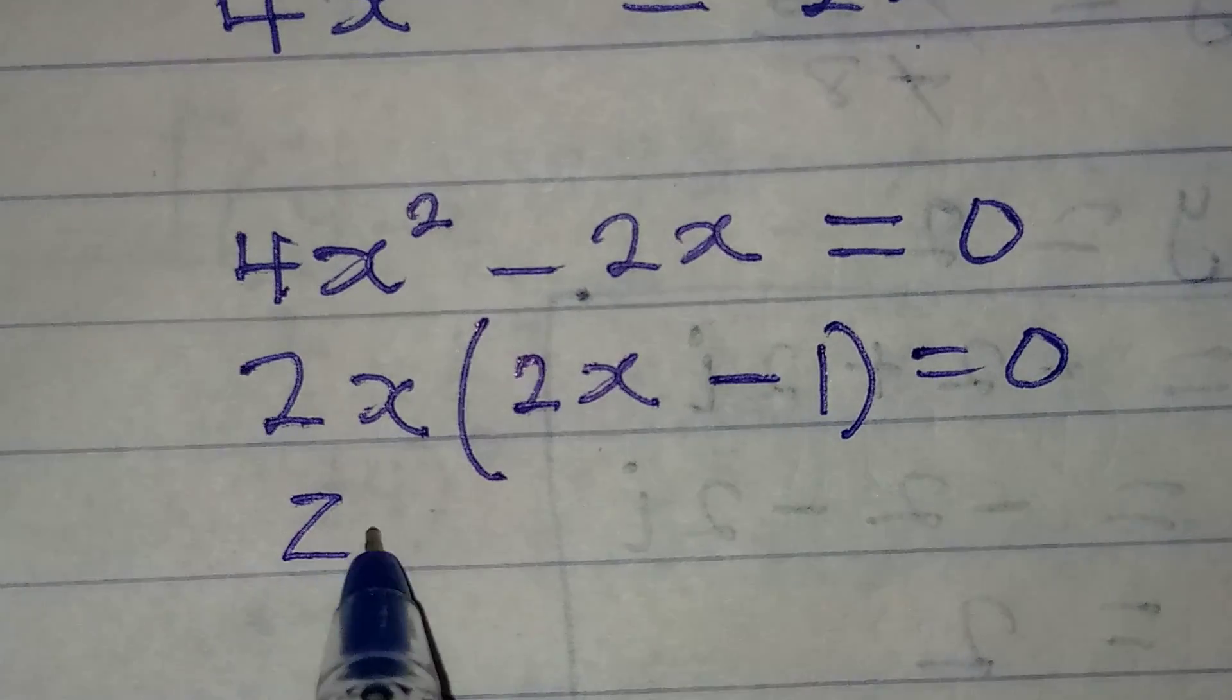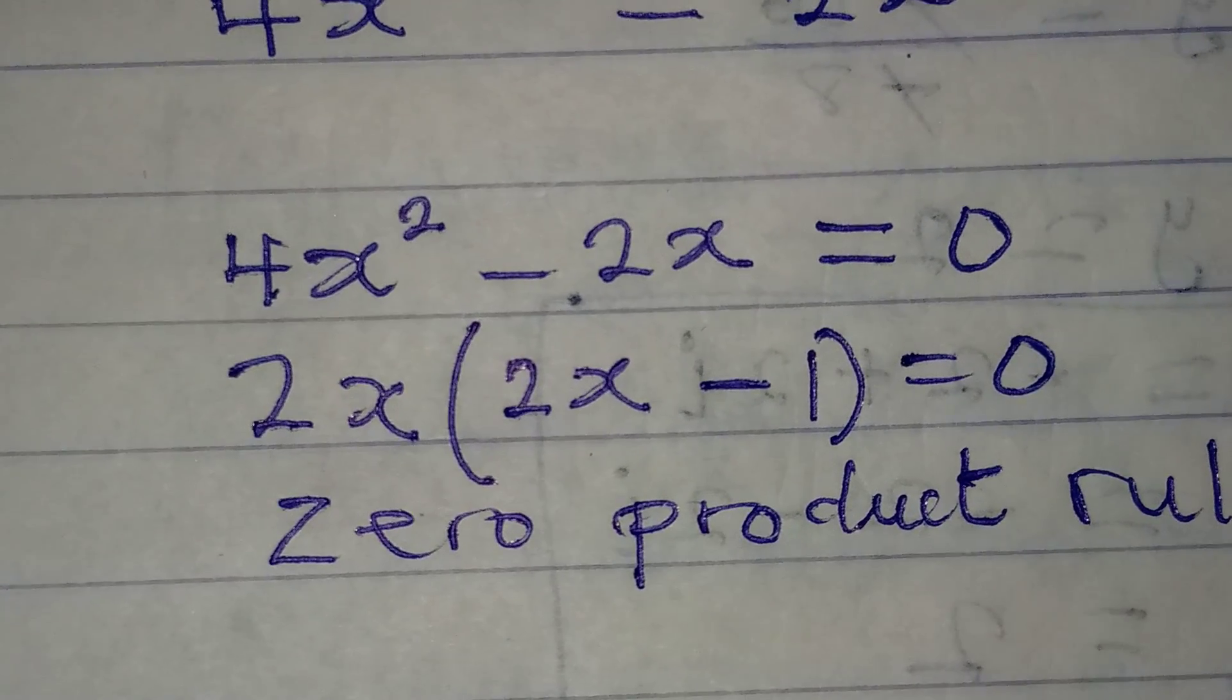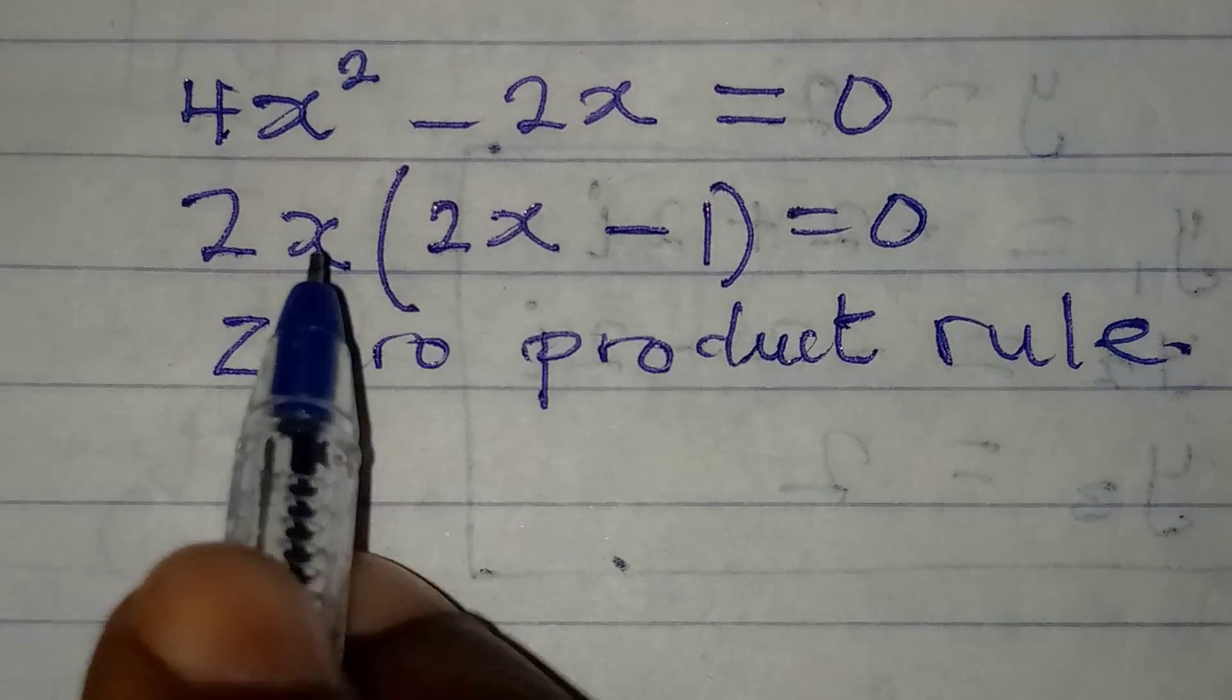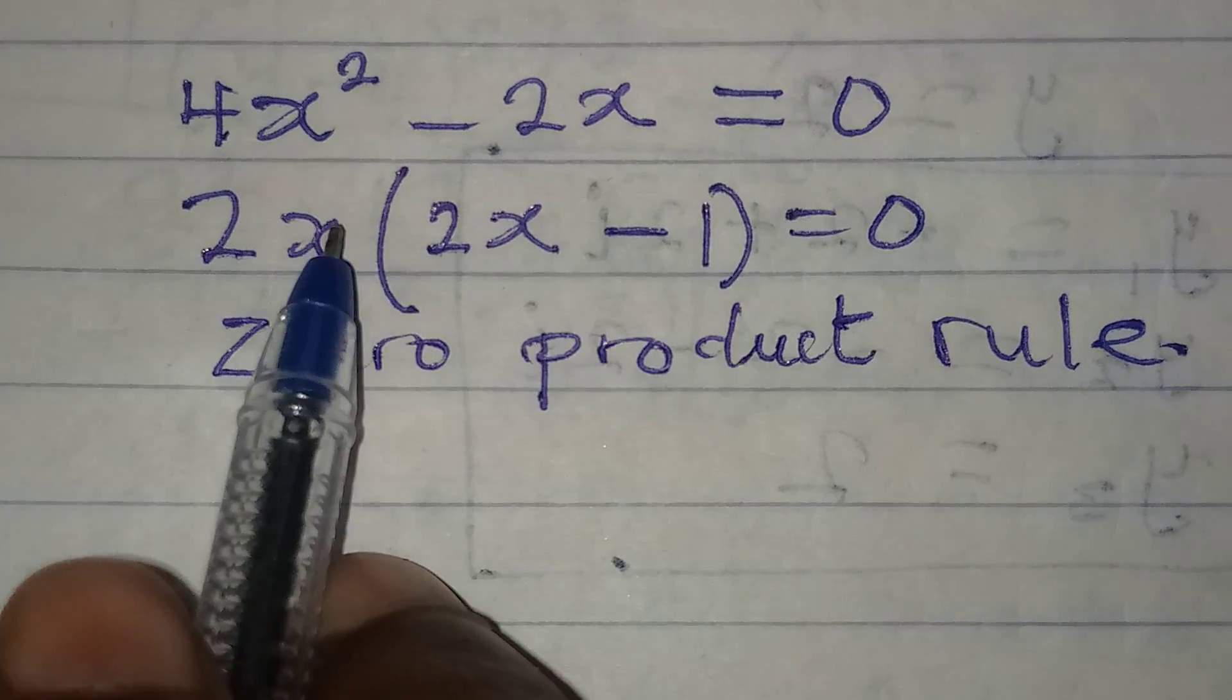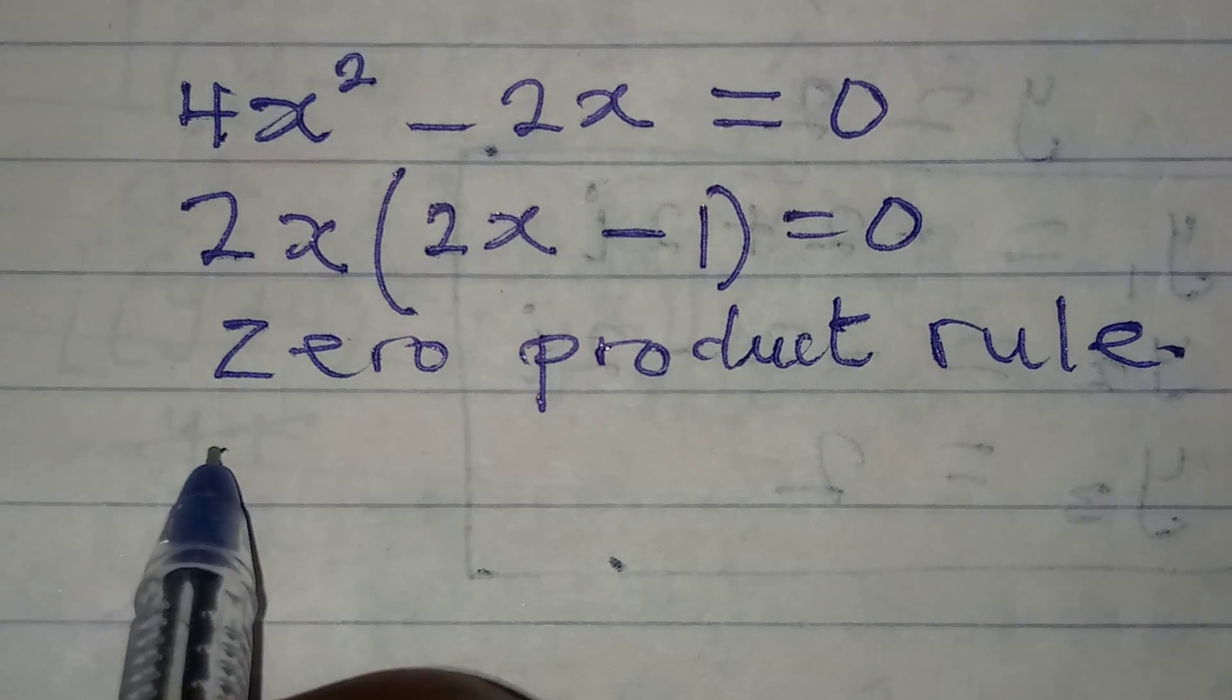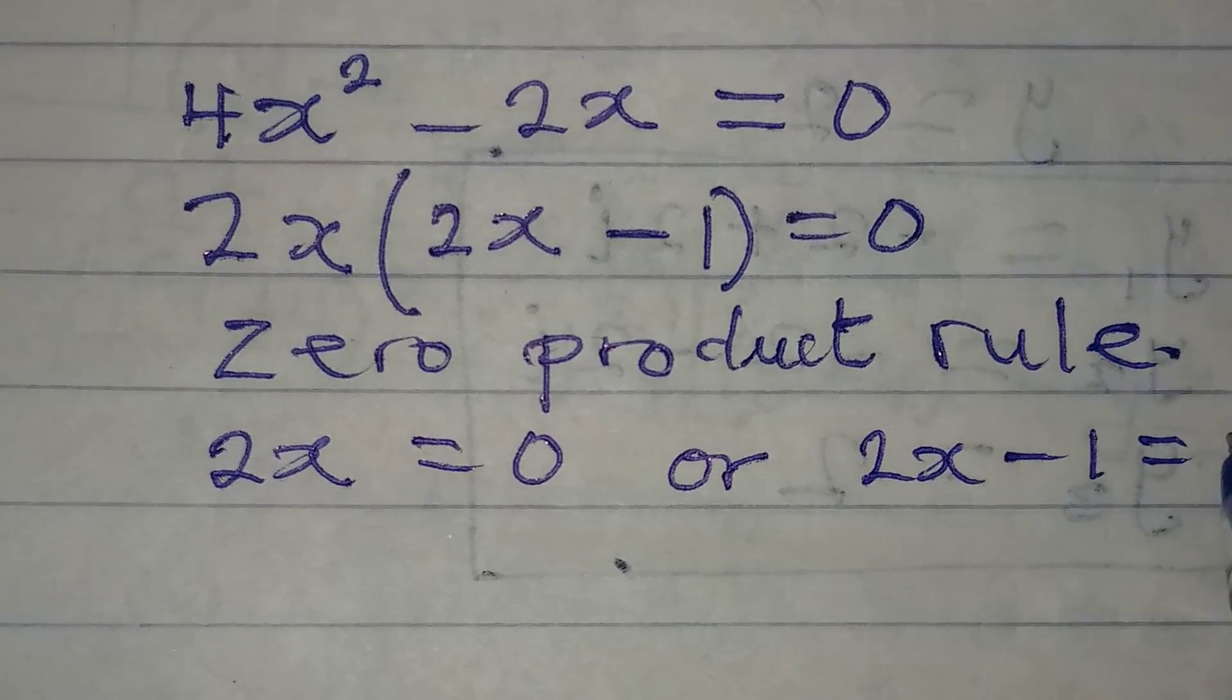From here we apply zero product rule. The zero product rule says that if you have two numbers or two expressions to multiply, if their product is equal to zero, then it means that either of them is equal to zero. This means that either 2x = 0 or 2x - 1 = 0.